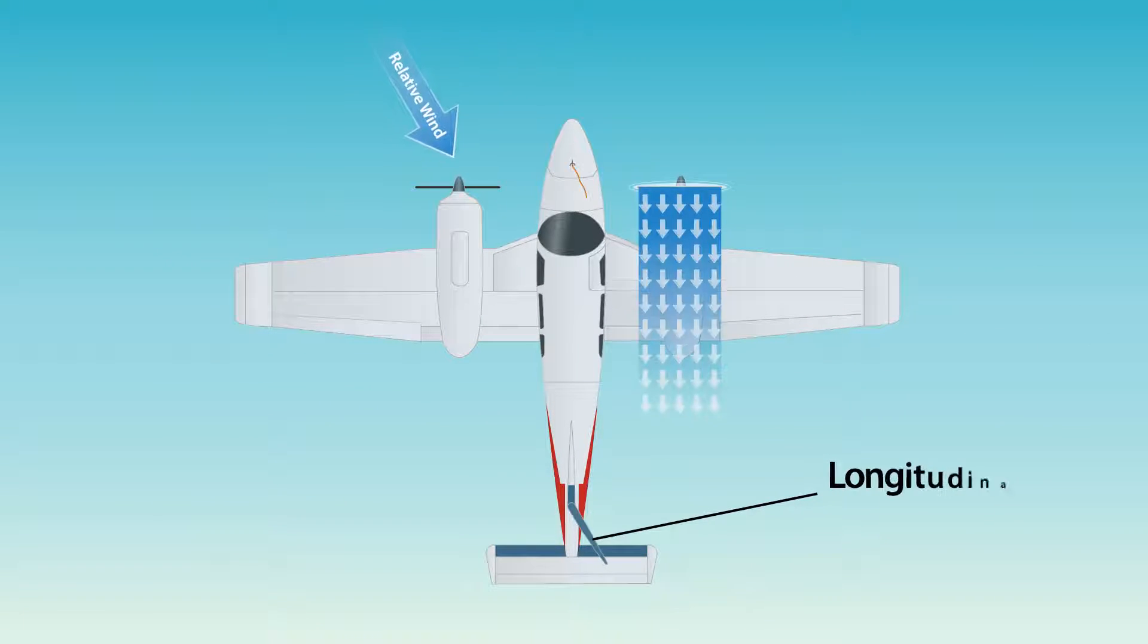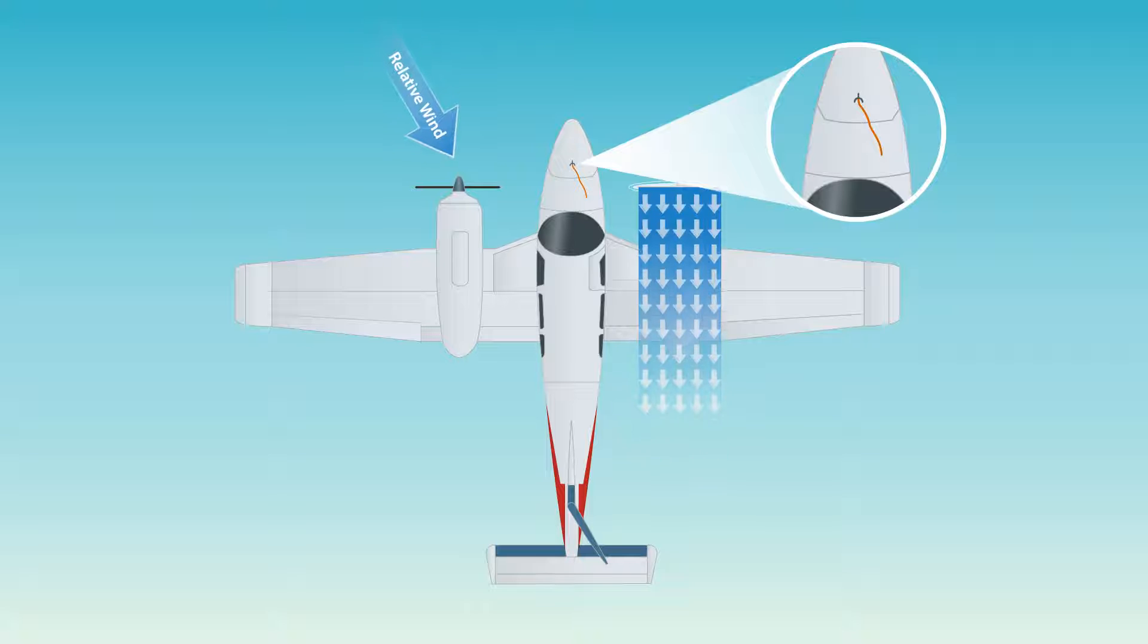During flight in any airplane, zero sideslip is the airplane's longitudinal axis paralleling the relative wind. This can be easily seen using a yaw string.